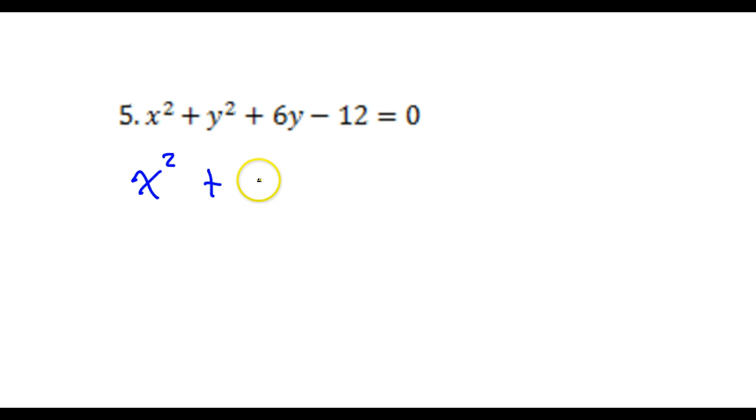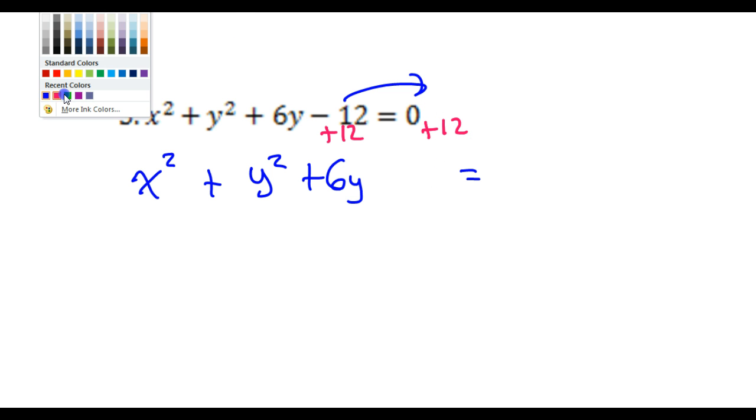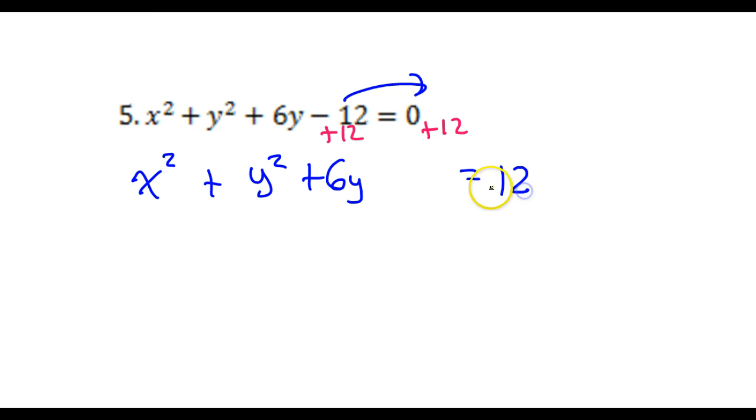The x squared will just stay x squared the entire time. So I've got x squared plus y squared plus 6y. Leave a space. And this 12 has to go away. So let's do the opposite and add 12 to both sides.